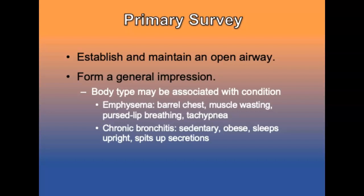During the primary survey, establish and maintain an open airway and form a general impression. The body type may be associated with particular pathologic conditions. Emphysema patients often have a barrel chest, muscle wasting, pursed-lip breathing, and are often tachypneic without profound hypoxia or cyanosis. Patients with chronic bronchitis tend to be more sedentary, may be obese, often sleep in a chair, and have medications, inhalers, or nebulizers nearby.